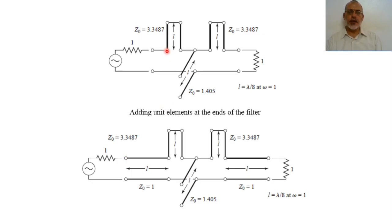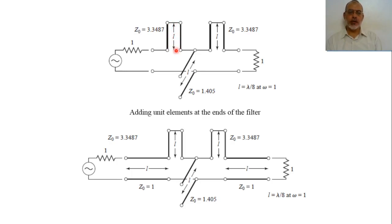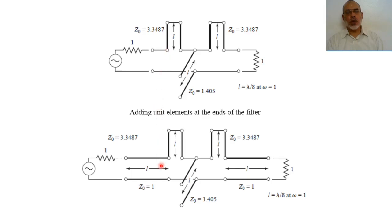It can be noted that in this configuration, the series short-circuit stub is directly connected to the open-circuit shunt stub. To implement a series transmission line section in microstrip line is very complicated, so it is required to convert it from a series short-circuit transmission line section to a shunt transmission line section. To convert it, we are going to add Kuroda transmission line sections of length lambda over 8 and characteristic impedance Z0 equal to 1, which is the same as the source impedance.